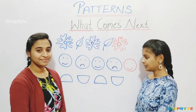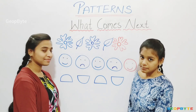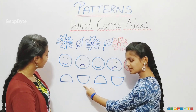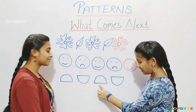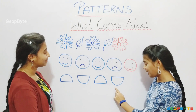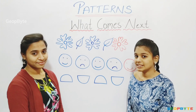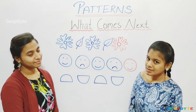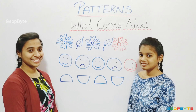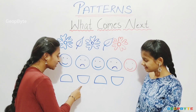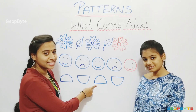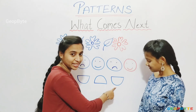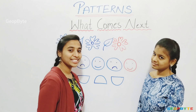Now, see here. There are few semicircles: semicircle, upside down semicircle, semicircle, upside down semicircle. What comes next? Upside down semicircle or semicircle? Let us see. After upside down semicircle, we got a semicircle. So, after upside down semicircle, we will get a semicircle.